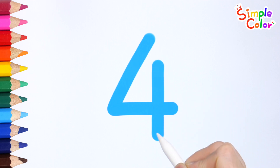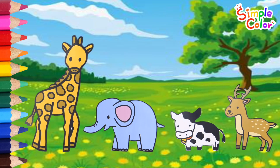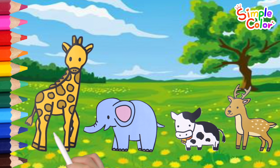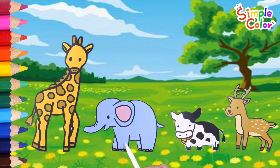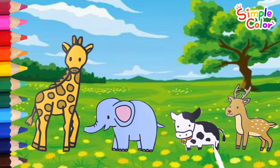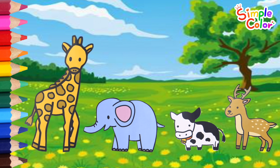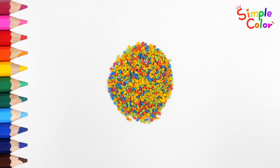3, 4. Learn numbers by counting animal legs. 1, 2, 3, 4. Giraffes, elephants, cows, and deer are four-legged animals. 4. Let's make some numbers.